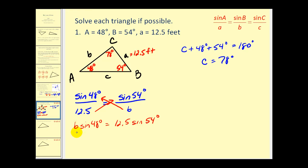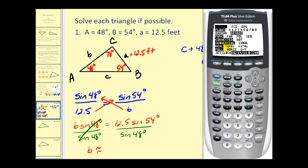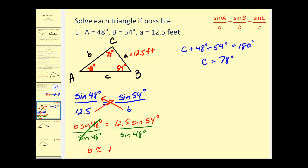So we have B times sine 48 must equal 12.5 times sine 54. So now we can solve for B by dividing both sides by sine 48 degrees. So now we'll have B is approximately equal to this quotient. Let's go ahead and get our calculators out, make sure that we are in degree mode, and our numerator will be 12.5 times sine 54 degrees divided by sine 48 degrees. And so it looks like it's about 13.6 feet for side B.